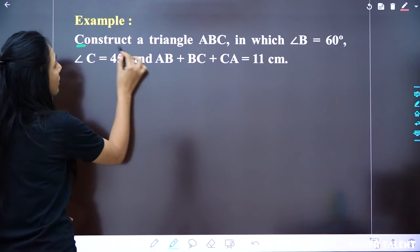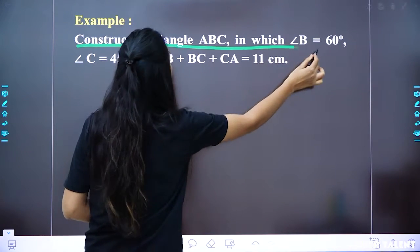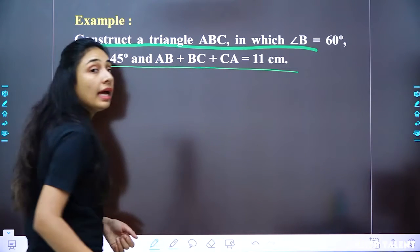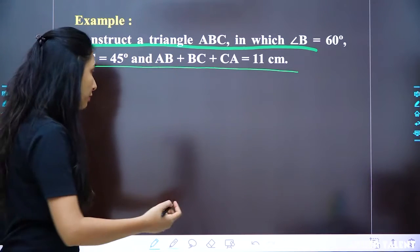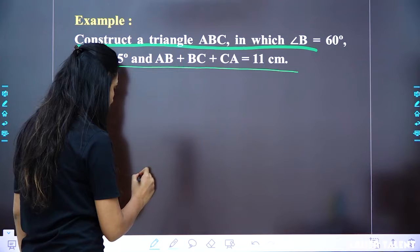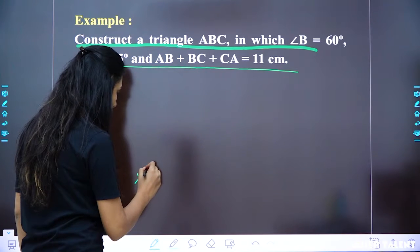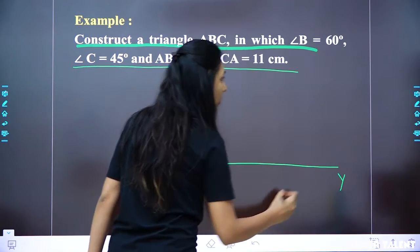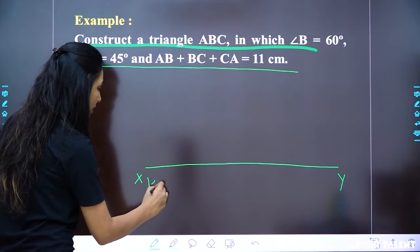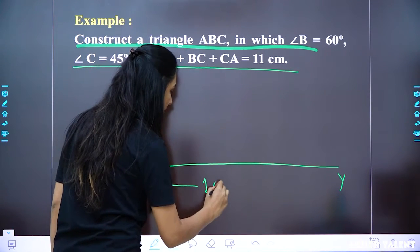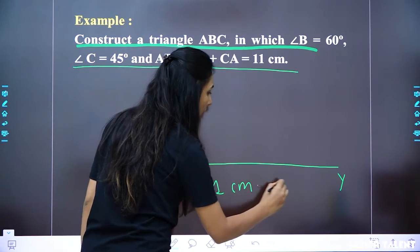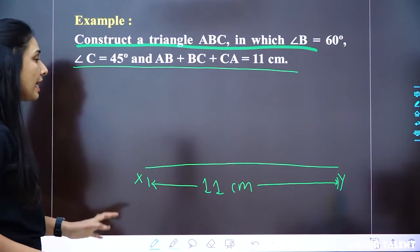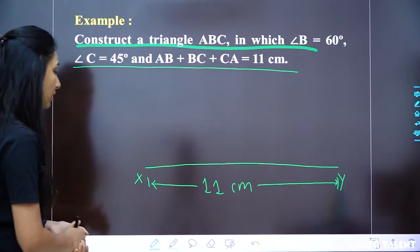Example: construct triangle ABC in which angle B = 60°, angle C = 45°, and BC + CA + AB = 11 cm. We start by drawing XY equal to 11 centimeters.